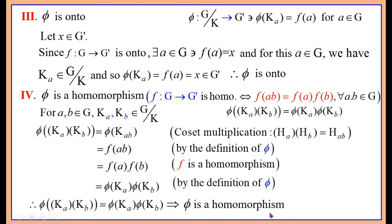Thus we have shown that phi is well-defined, one-to-one, onto, and a homomorphism. Since a function is an isomorphism if it is one-to-one, onto, and a homomorphism, phi is an isomorphism. Therefore G/K is isomorphic to G', hence G/K is isomorphic to G'.